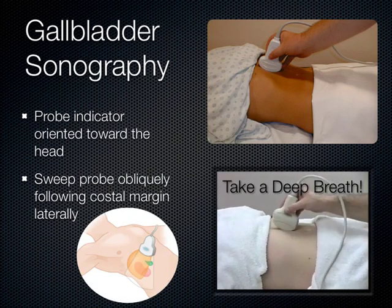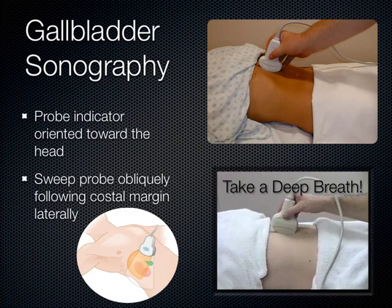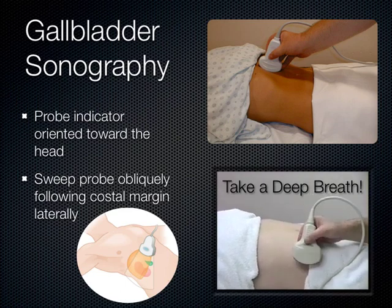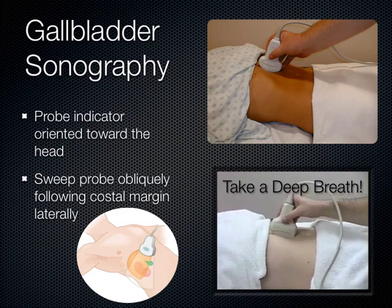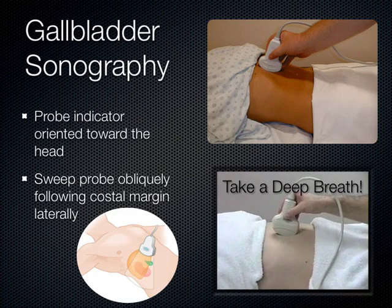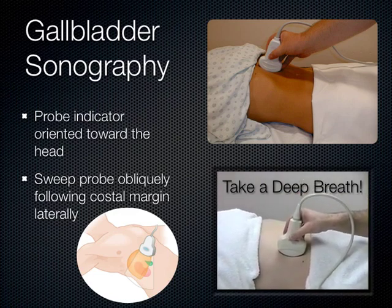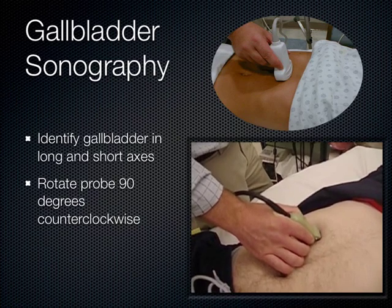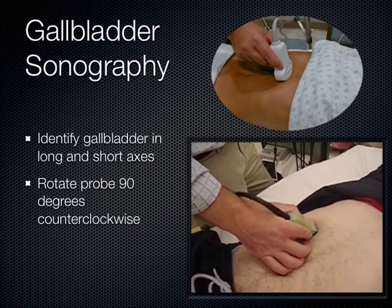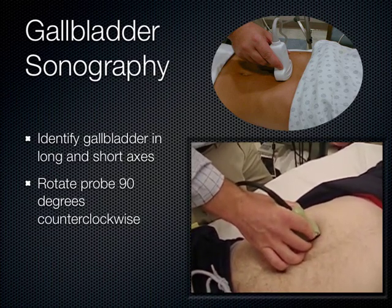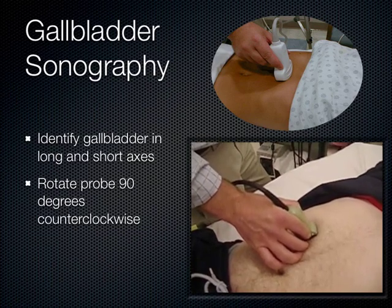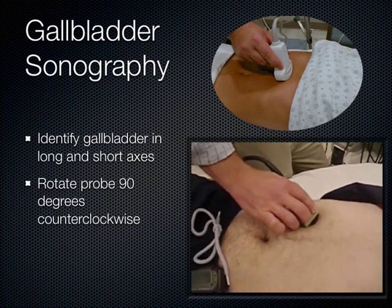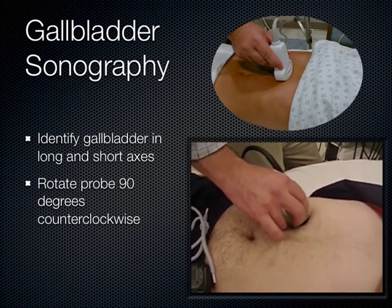Now let's talk about the gallbladder. Have the indicator aimed toward the patient's head in a sagittal plane, then the patient takes a deep breath — this is called the subcostal sweep. Once you get the gallbladder in its long axis, rotate the probe 90 degrees to get the short axis. Fan through the entire gallbladder in both axes looking for any pathology.